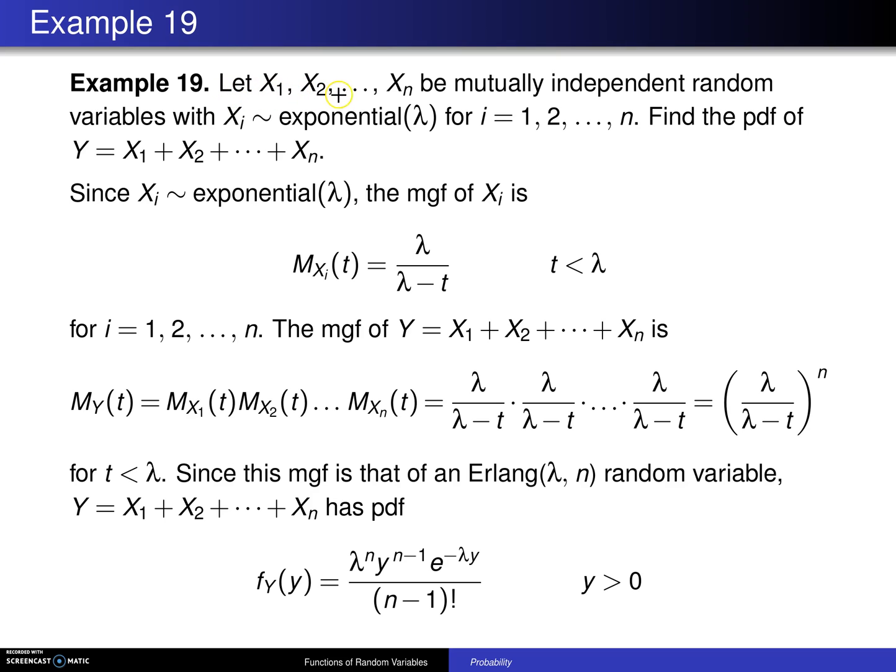Let x1, x2, up to xn be mutually independent random variables with xi having the exponential distribution with parameter λ for i equals 1 to n.